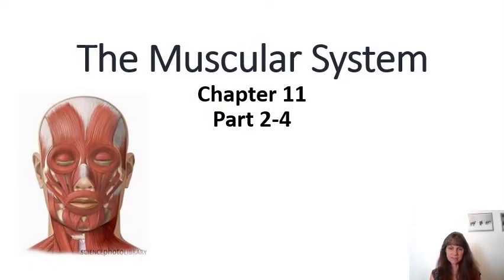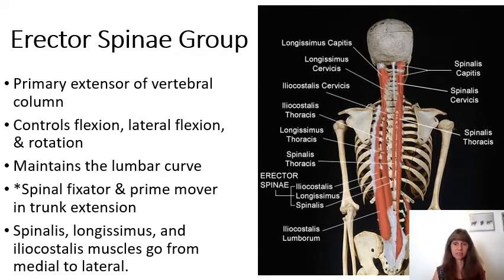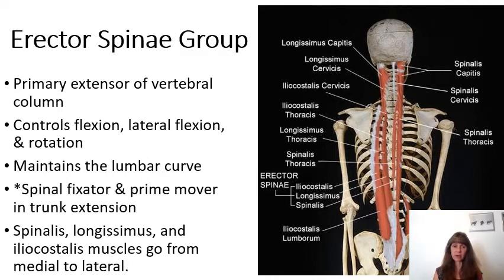This recording is the muscular system part 2 of 4. The next group of muscles we're going to look at is the erector spinae muscle group. These are muscles that are the primary extensors of the vertebral column, keeping it erect or straight. They also help to control flexion, lateral flexion, and rotation of the spine, and help to maintain the lumbar curve. They act as spinal fixators and are prime movers in trunk extension.